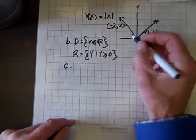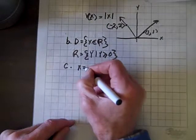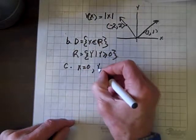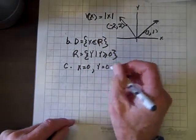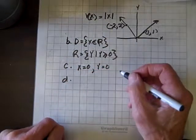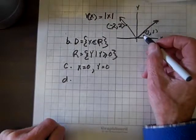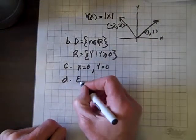As to the intercepts, there's one intercept at (0, 0). Is this function odd, even, or neither? Well, it is symmetric about the y-axis, so it is even.